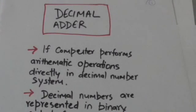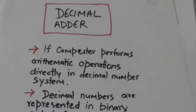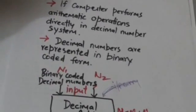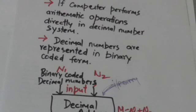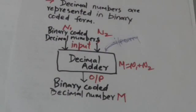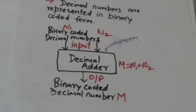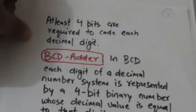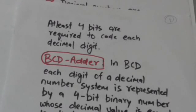Hello friends, welcome back. In this tutorial we will study about decimal adders. If a computer performs arithmetic operations directly in decimal number system, then in that computer decimal numbers are represented in binary coded form. Adders of such computers are called decimal adders. Decimal adders take decimal numbers to be added in binary code as input and produce the sum of these input decimal numbers as output in the same binary code.